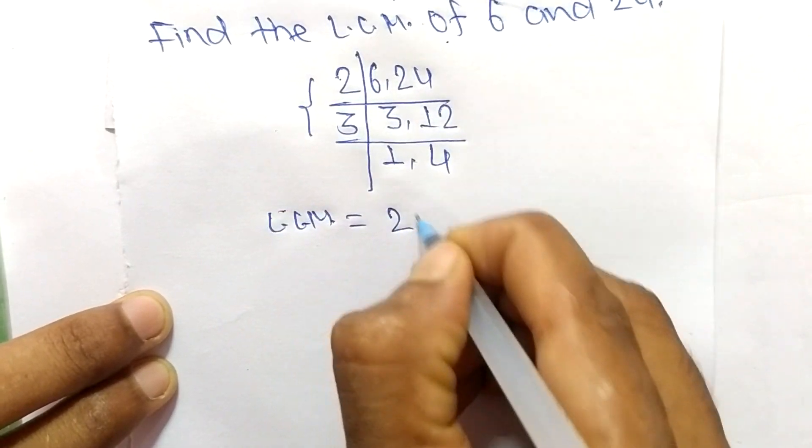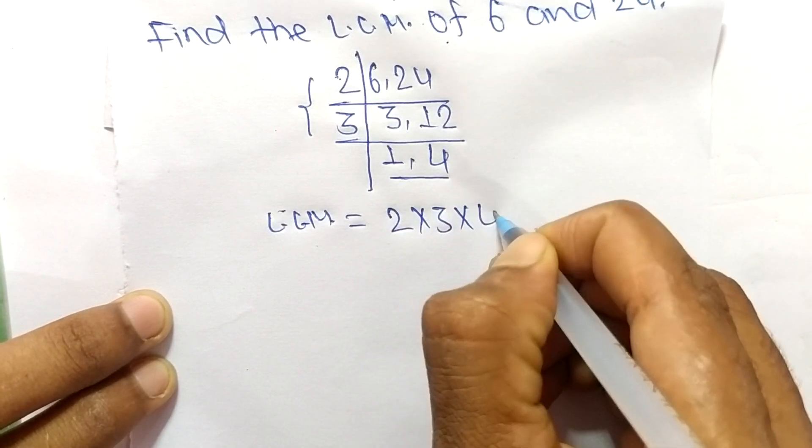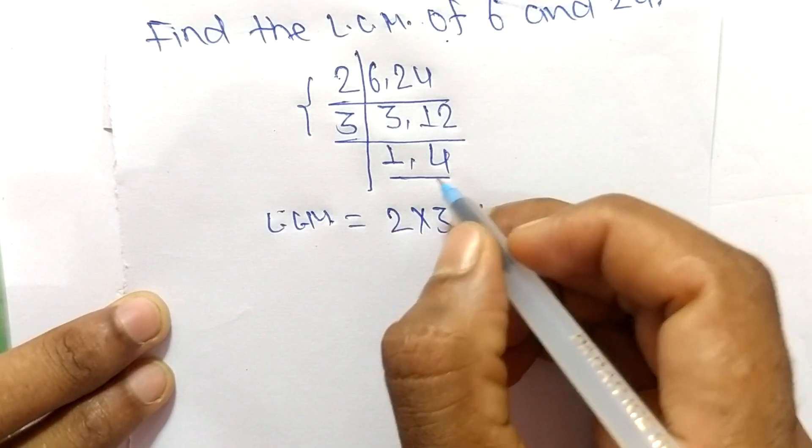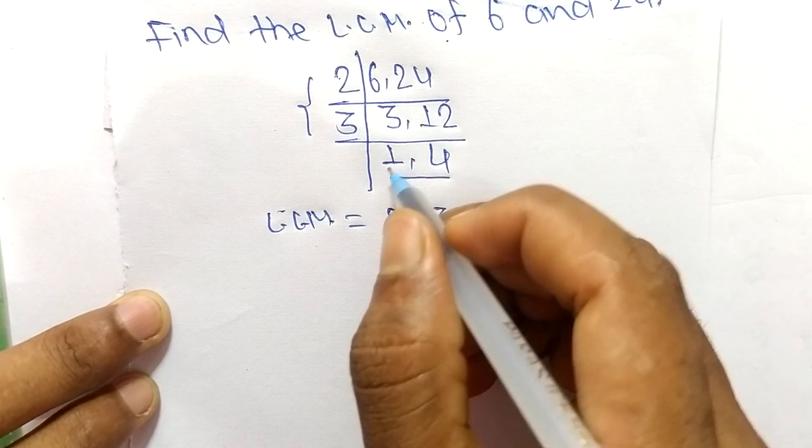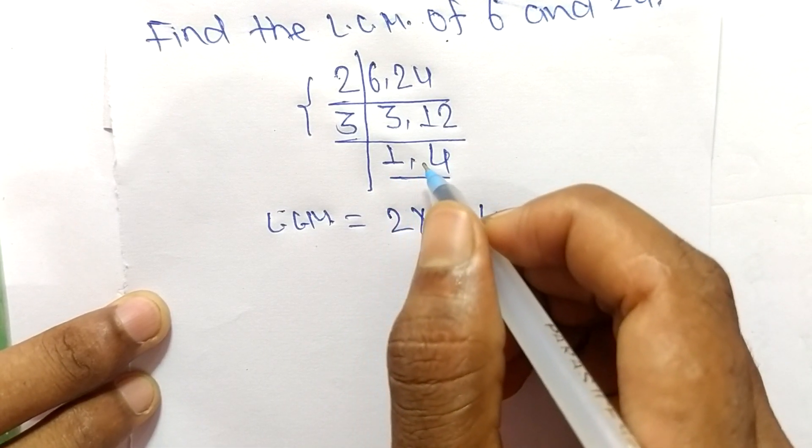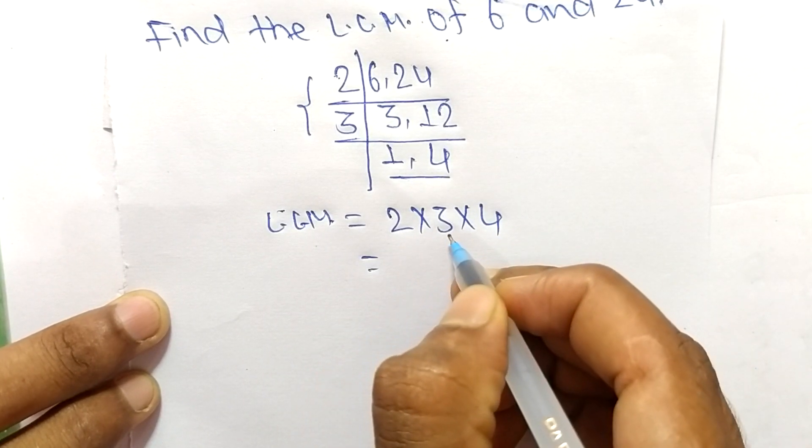Now we can write LCM equals 2 times 3 from the first part, and from the second part we take only 4 and neglect 1, because multiplying any number with 1 gives the same result.